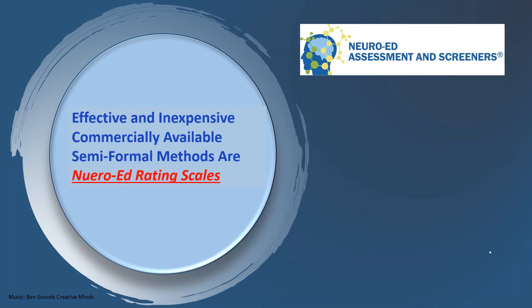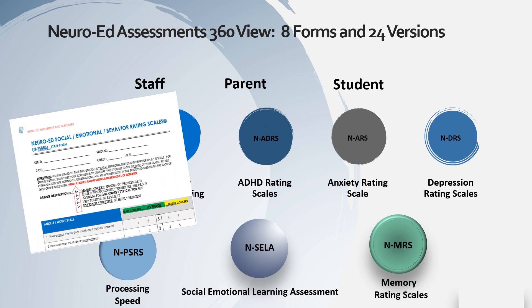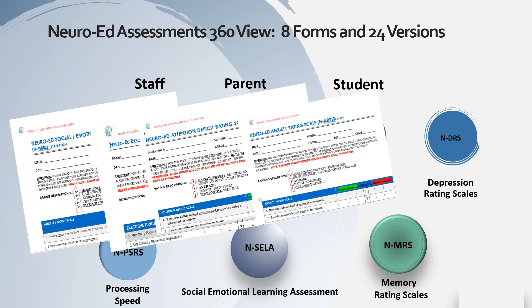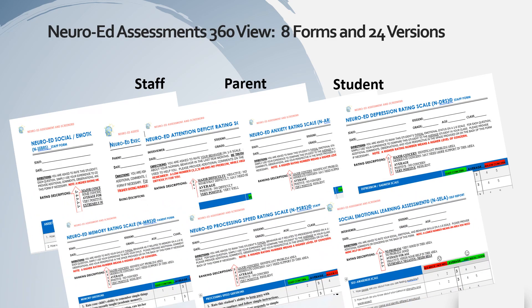One of the most effective, quickest, and inexpensive commercially available semi-formal methods on the market today are the NeuroEd Rating Scales, especially the NeuroEd Rating Scales for Anxiety. For each of our eight easy-to-use rating scales, there are three versions practitioners can use: staff, parent, and student versions, which provides a robust 360-degree view of the student and accounts for all perspectives. We have effective and easy-to-use rating scales related to broad social-emotional issues, executive functioning, ADHD, anxiety, depression, memory, processing speed, and social-emotional learning programs.